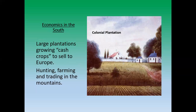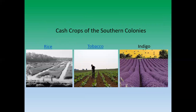In the South, agriculture is the big moneymaker. All the cash crops — the big ones being tobacco and indigo. There's a lot of hunting, farming, and trade going on in the mountainous areas, like the further out you're getting towards the Blue Ridge. Rice in the coastal areas, tobacco all over the place, and indigo mostly on the eastern side as well. These are the big three trading items of the southern colonies.